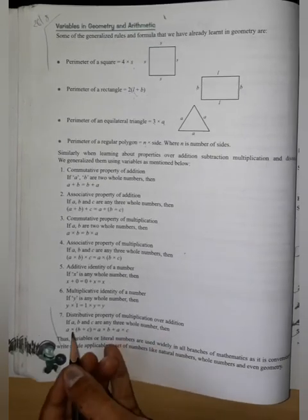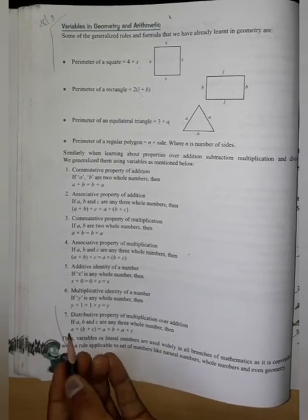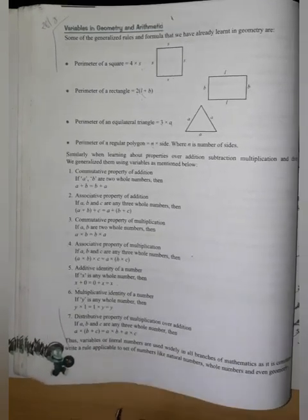Distributive property of multiplication over addition: A into bracket B plus C is equal to A into B plus A into C. So this is our distributive property.